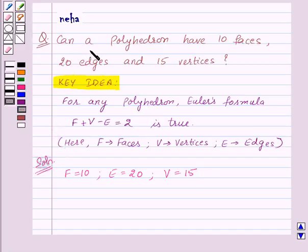Now we need to check whether a polyhedron can have 10 faces, 20 edges and 15 vertices. We know that a polyhedron with these values is only possible if it satisfies Euler's formula. So by Euler's formula we have F plus V minus E equals 2.